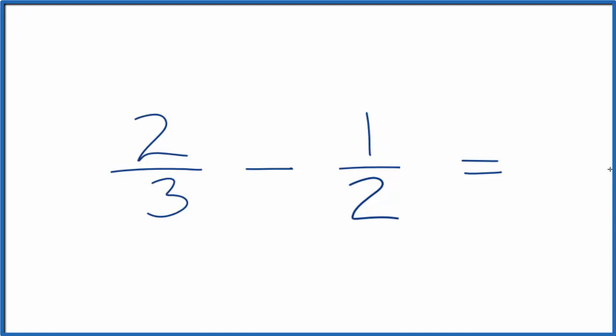When we're subtracting or adding fractions, we need to get the denominator, that's the number on the bottom, to be the same. Then we can just subtract the numerator and bring the denominator across.